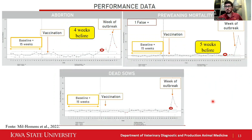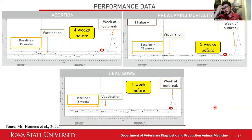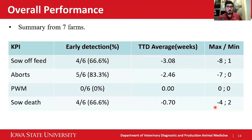More recently, we are also working with the number of sows serviced per week. In that case, we were able to detect one week before as well. Here is a summary across seven farms. Overall, the sow feed intake had 66% early detection. Abortions is still a little better. But when we think about the time to detect — average, maximum, and minimum — the sow feed intake for all these farms was able to flag up to eight weeks before the farm reported the change in status. There is a lot of variability and Mafalda is working on that.